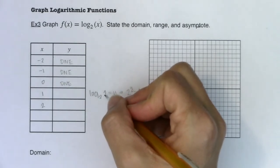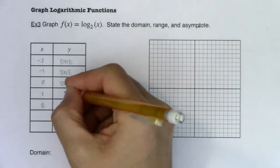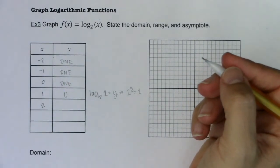And we've mentioned this a few times. Whenever your argument is one, your exponent will be zero. Alright, so I have my first ordered pair.